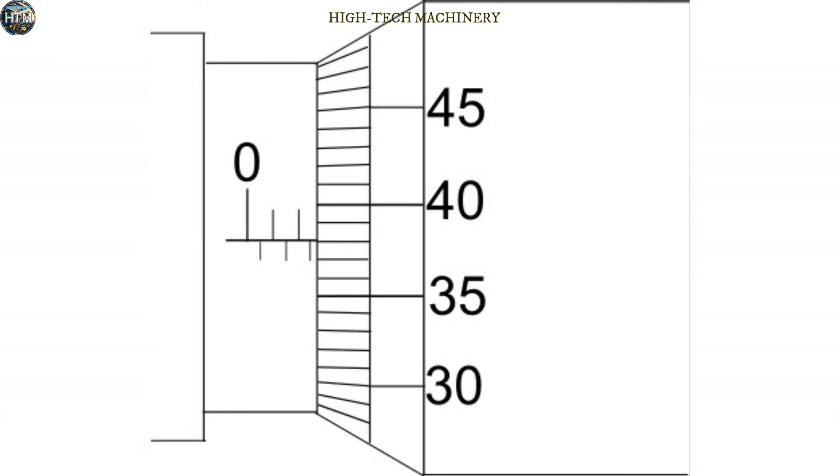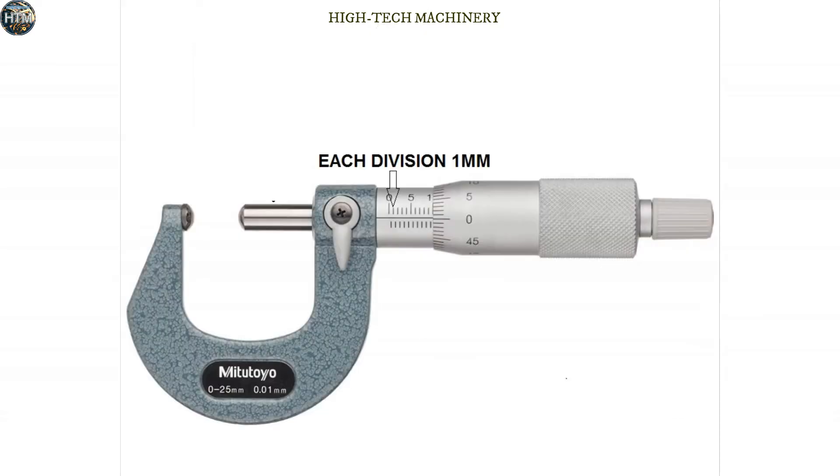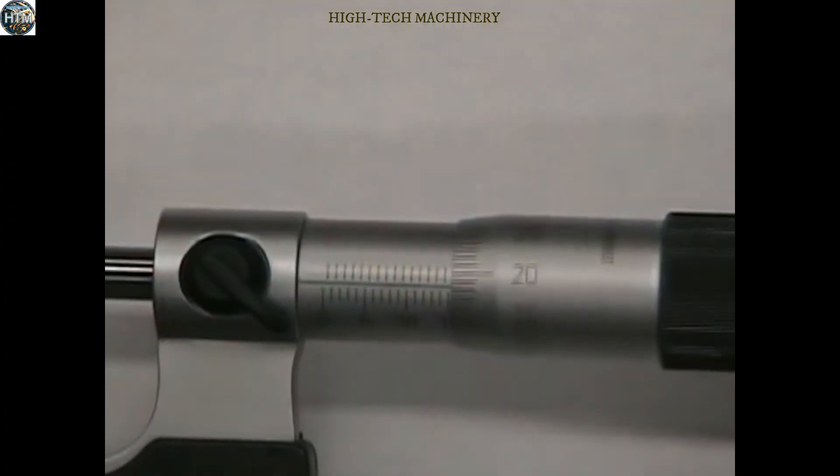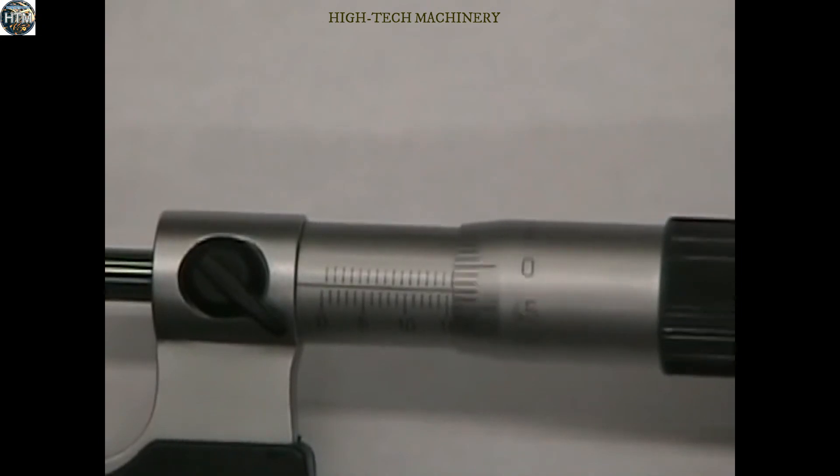Micrometer reading is a combination of main scale reading and vernier scale reading. Each division of the main scale is 1 millimeter and each division has a subdivision of 0.5 millimeter. The bevel edge of the thimble is graduated in 50 equal divisions, and every fifth number line is marked with a number. If you rotate the thimble for one revolution, it will move 0.5 millimeter, and two revolutions will move 1 millimeter.